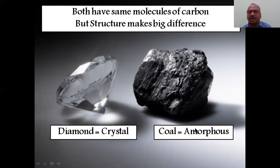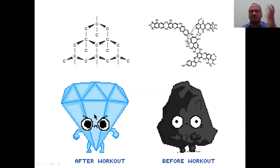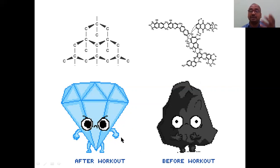If you crush coal you get a powder — it is the amorphous form. If you are highly disciplined with a highly ordered molecular structure, nobody can disturb you — you will be stable like a diamond. Coal, if worked properly, also becomes like a diamond. That's how you can remember the difference.